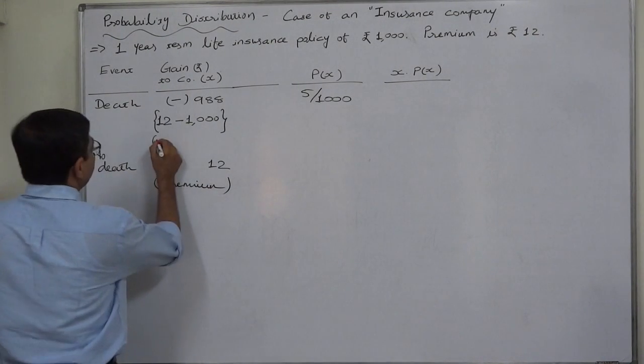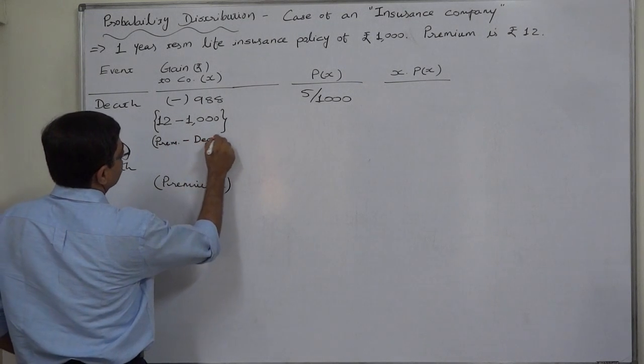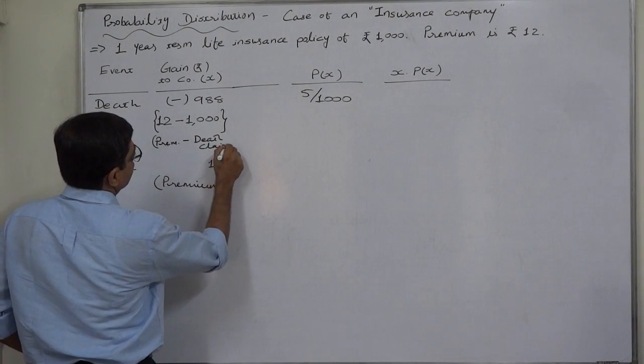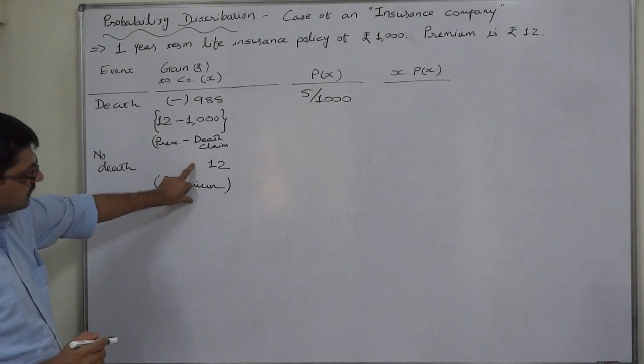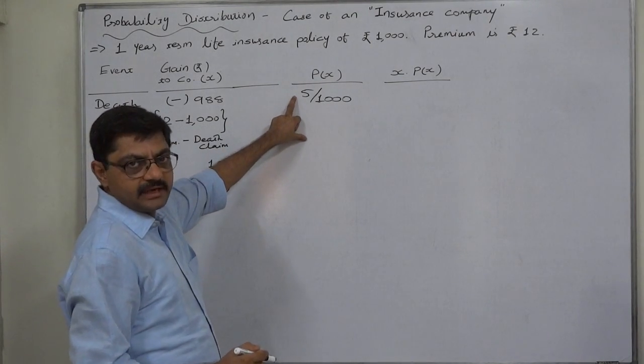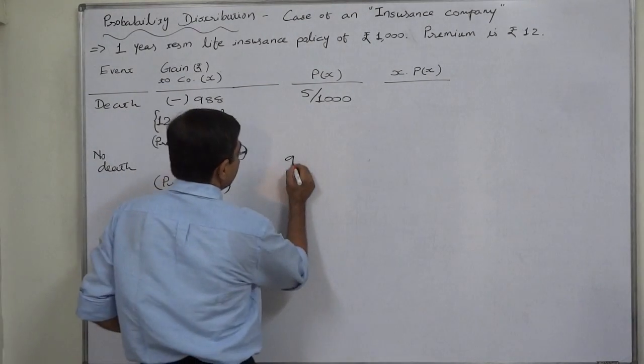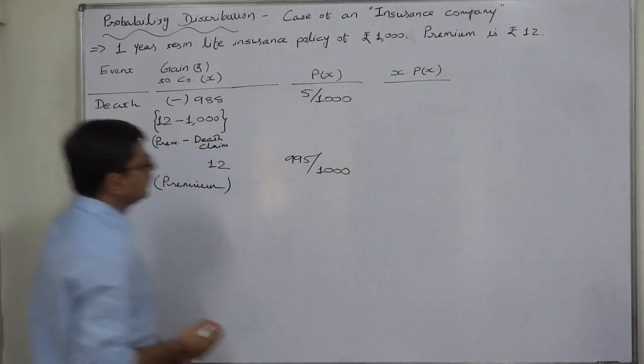This is actually premium minus death claim in case of death. What is the probability of this incidence? Out of 1000, if we believe that 5 actually dies, then 995 remains in case of no death.